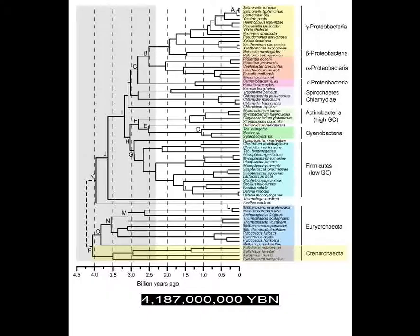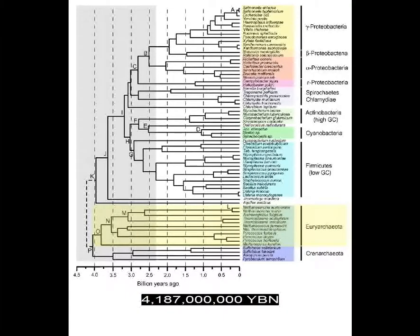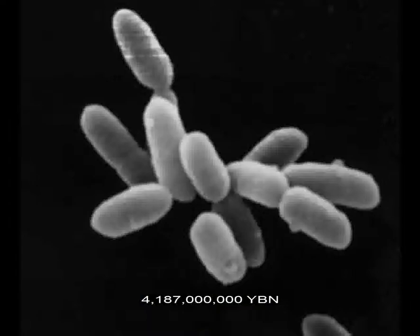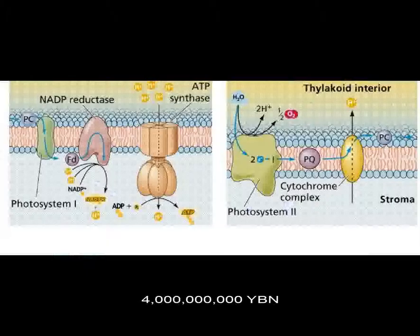Prokaryote flagellum. Archaea Crenarchaeota, Cepholobus, Archaea Euryarchaeota, methanogens, halobacteria. Earliest cell response to light — cells produce their own food. Autotrophy. Photosynthesis evolves in bacteria. Cells emit free oxygen — this is the main system responsible for producing the oxygen now in the air of Earth.